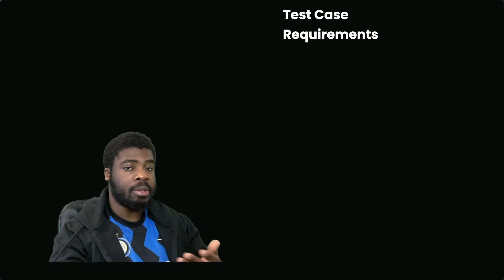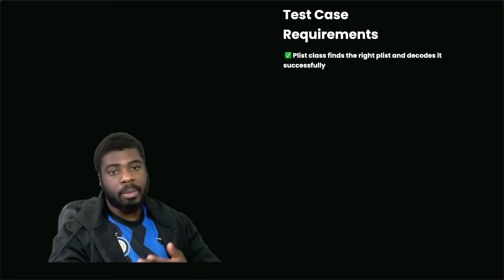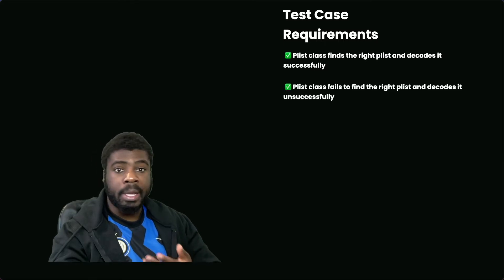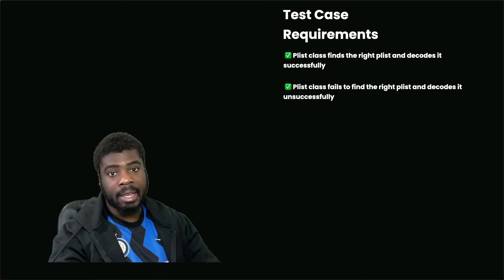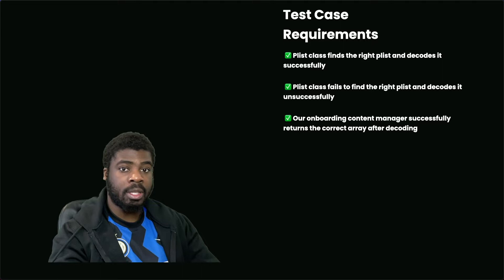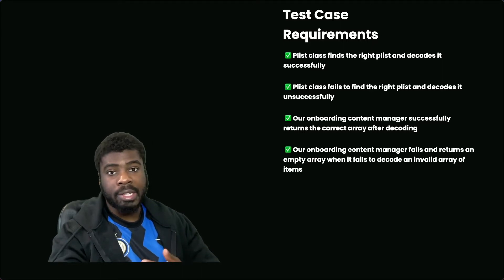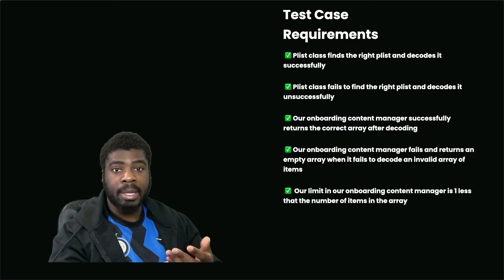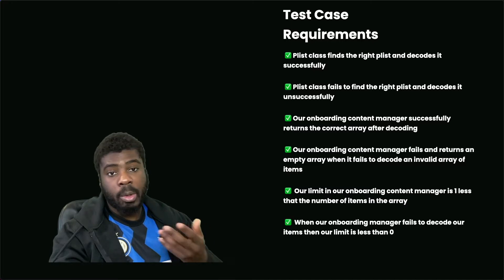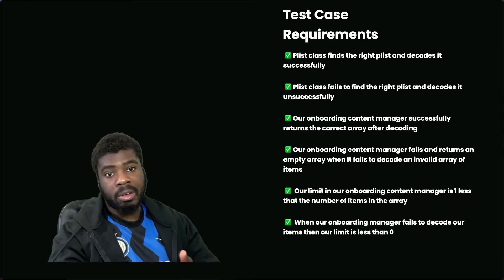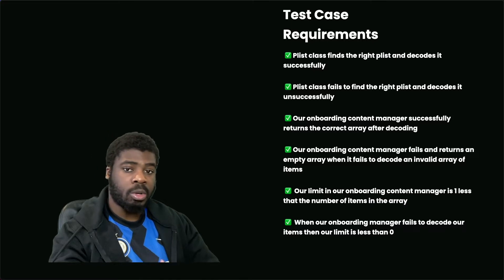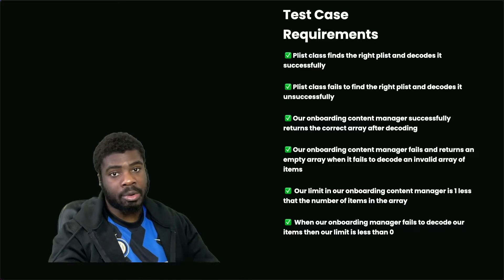The test cases we need to validate are: first, make sure that it finds the right plist file and successfully decodes it; second, make sure our plist class fails when passed an invalid name and fails to decode; third, make sure our onboarding content manager successfully returns an array of objects; fourth, that it fails when passed an invalid file; fifth, that our limit in the onboarding content manager is less than one; and sixth, that if it fails to decode, we return a value less than zero.